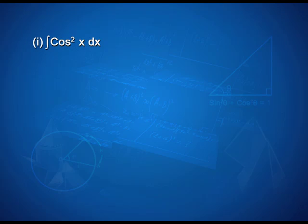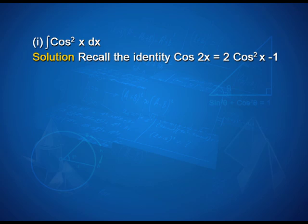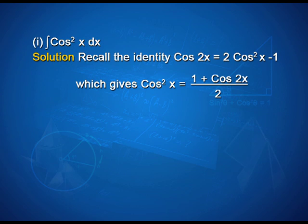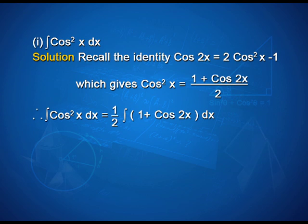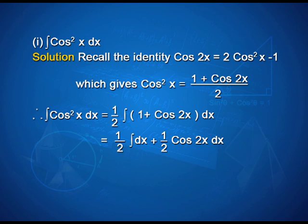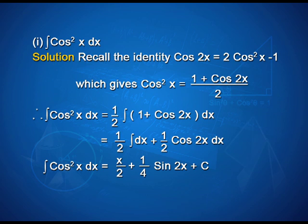Now let us look at integration using trigonometric identities. When the integrand involves some trigonometric functions, we use some known identities to find the integral. Example 1: find ∫cos²x dx. To calculate this, we recall the identity cos(2x) = 2cos²x − 1, which gives cos²x = (1 + cos 2x)/2. Therefore, ∫cos²x dx = (1/2)∫(1 + cos 2x)dx = x/2 + (1/4)sin(2x) + c.